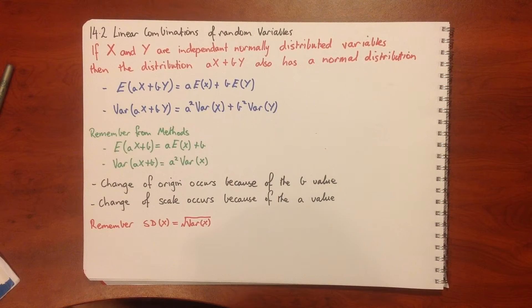Remember if x and y are independent normally distributed variables, then the distribution a times x plus b times y also has a normal distribution.